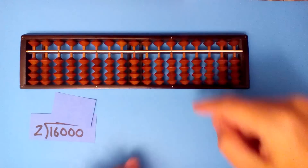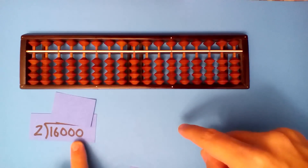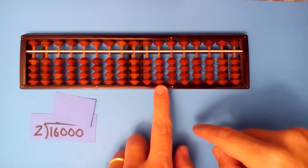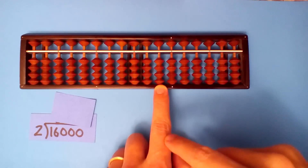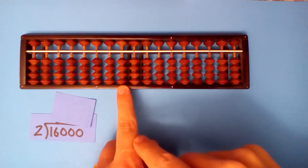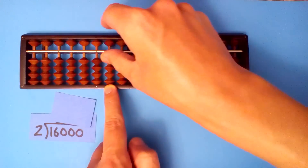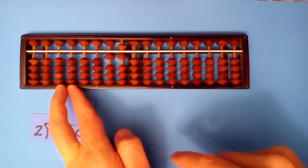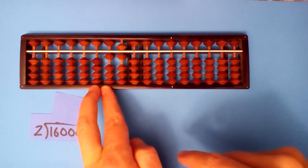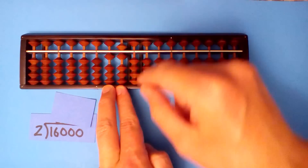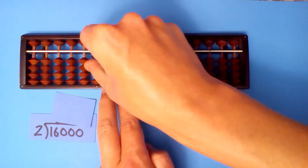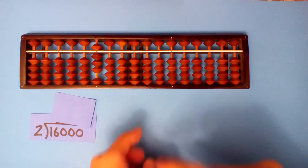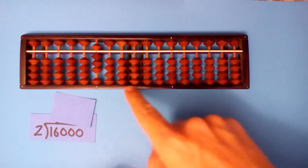16,000 divided by 2. There are 5 digits versus 1 digit, so there are 4 more digits in the dividend: 1, 2, 3, 4. Set up our dividend. Find 2 numbers that 2 goes into — 2 goes into 16 eight times. 8 times 2 is 16, and our quotient is 8,000.